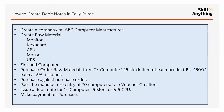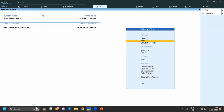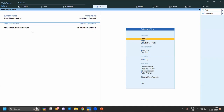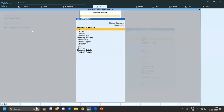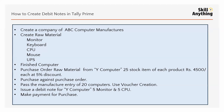The first question is: create a company ABC Computer Manufacturers. We have already created ABC Computer Manufacturer, so let's move to the next step — create a raw material. Let's create the raw material.